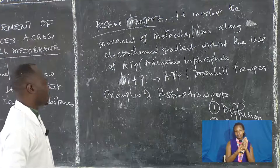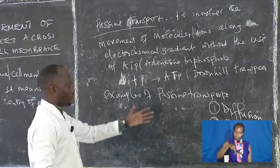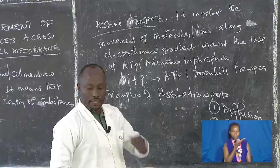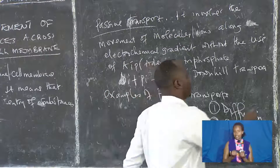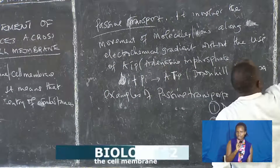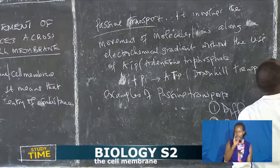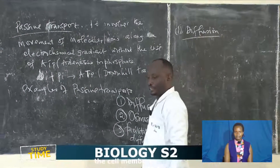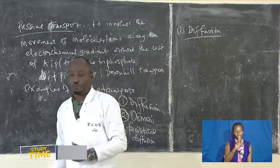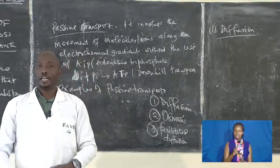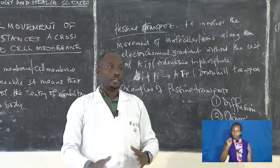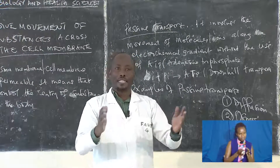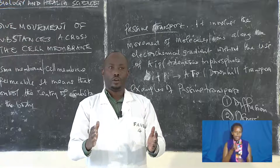Examples of passive transport: we have diffusion, we have osmosis, and we have facilitated diffusion. Let's start with diffusion. Diffusion is an example of passive transport, meaning the movement of molecules, ions, or gases does not require energy.